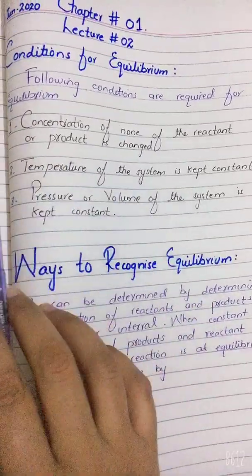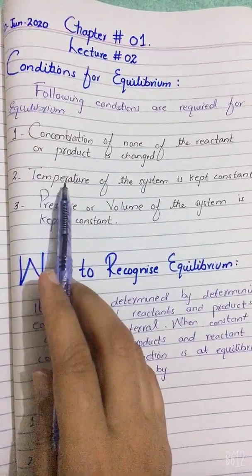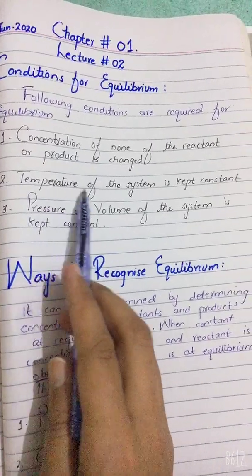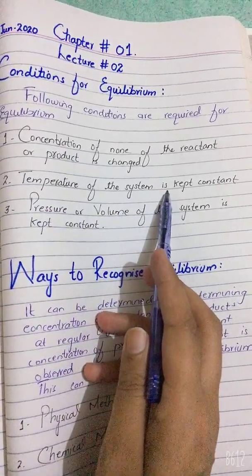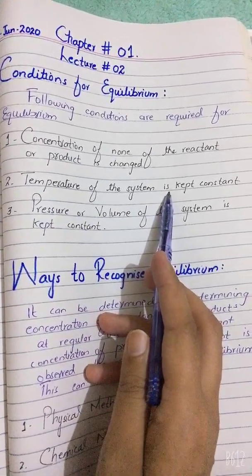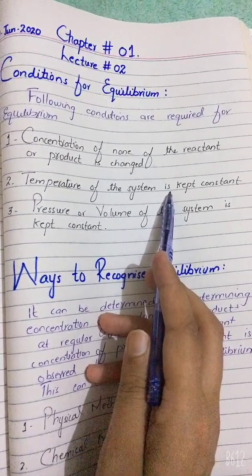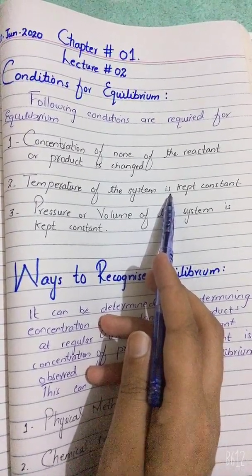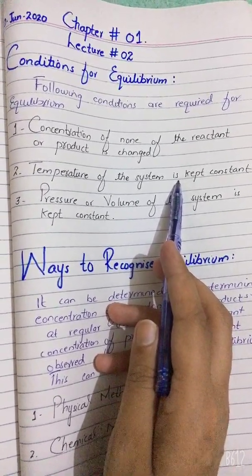The second condition is that the temperature of the system is kept constant. If you change the temperature, then the equilibrium may be disturbed and it may not be established.